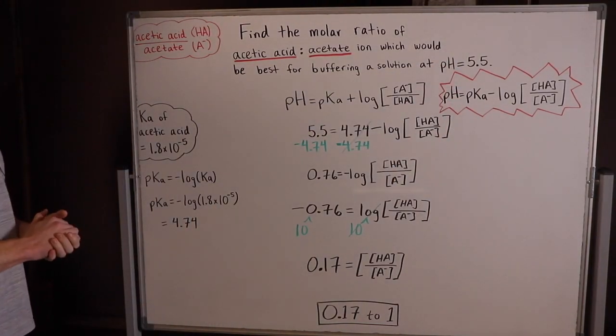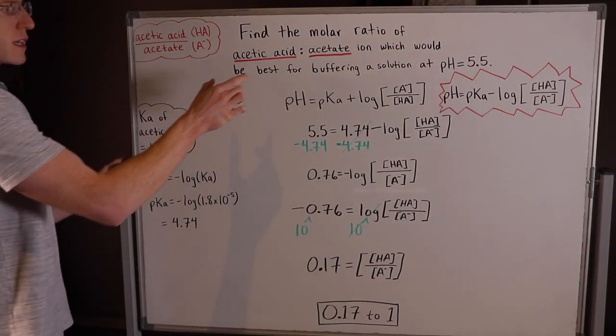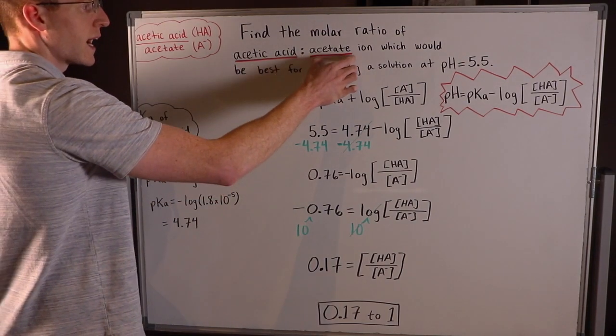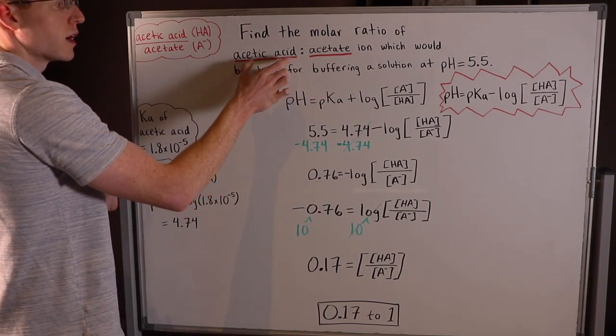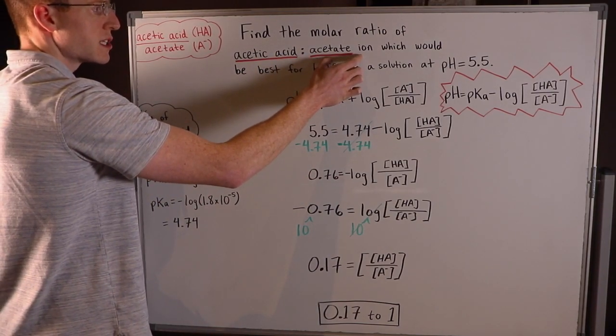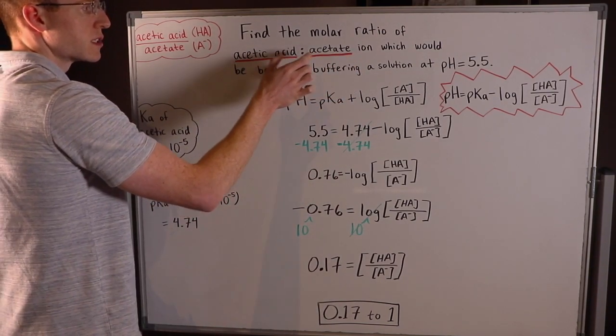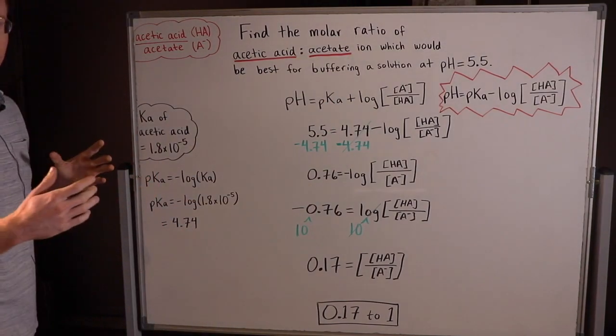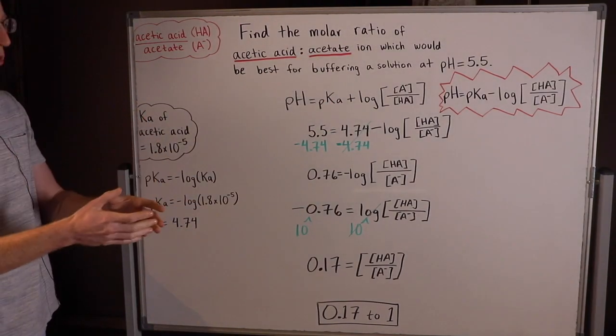So the first thing we have to understand here is that acetic acid to acetate is the ratio of an acid to its conjugate base. Acetate ion is acetic acid's conjugate base. A conjugate base is just an acid after it's donated its proton.